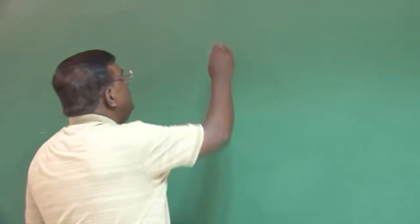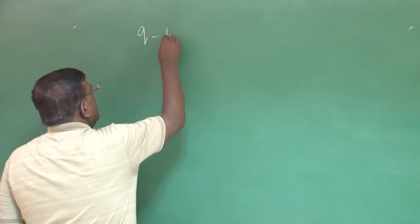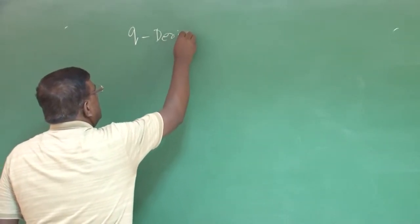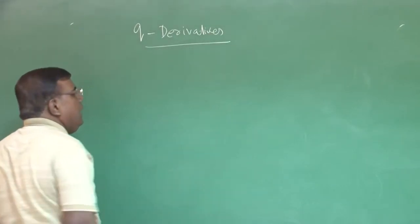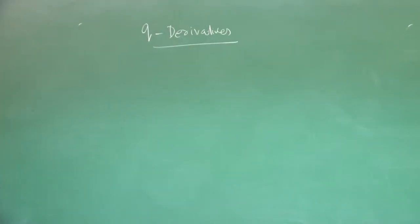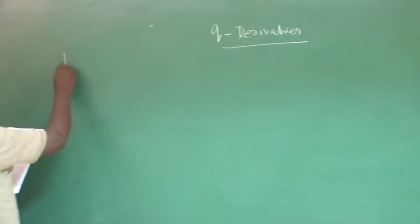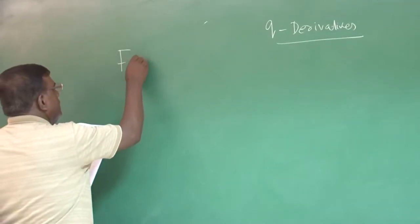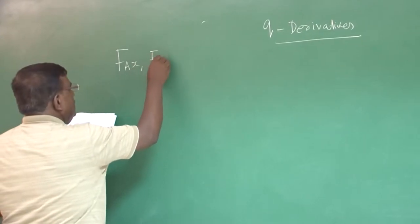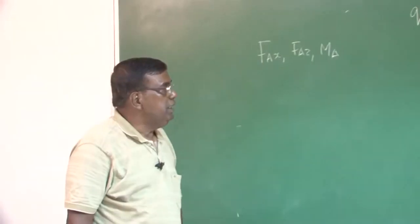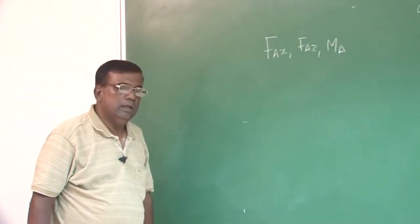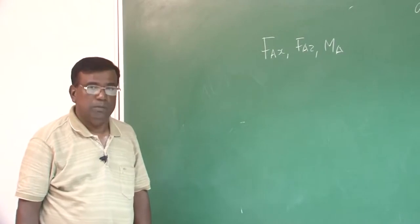Now, let us come to Q derivatives. We have done U derivatives, alpha derivative, alpha dot derivative, now Q derivatives. Again, we start like FAx, FAz and MA. Why we are taking these three things? Please understand, we are trying to build longitudinal perturbed equation of motion.